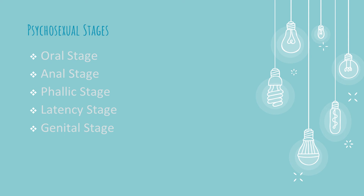Next one is the latency stage, which is from six to twelve years of age. In this stage, sexual urges are repressed and children focus on making social contacts and social relationships.